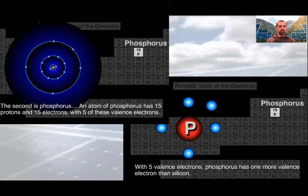The second is phosphorus. A phosphorus atom has 15 protons and 15 electrons. Two fills the first, eight the second, and five are occupying the third shell. With five valence electrons, phosphorus has one more valence electron than silicon.